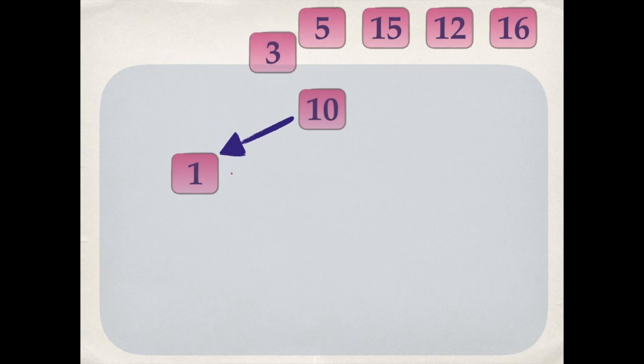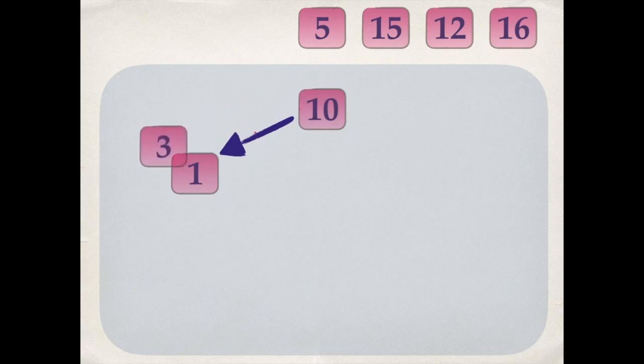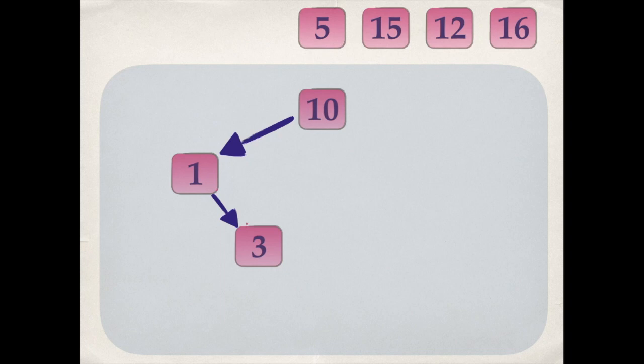Next number is three. We start from the root. Three is less than ten, so we move to the left. Three is greater than one, so we will move to the right, and it will become the right child of one.